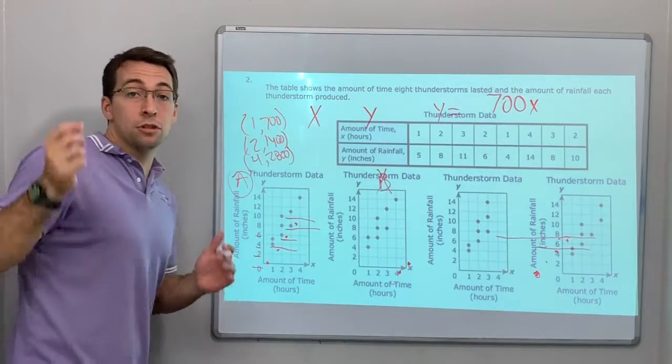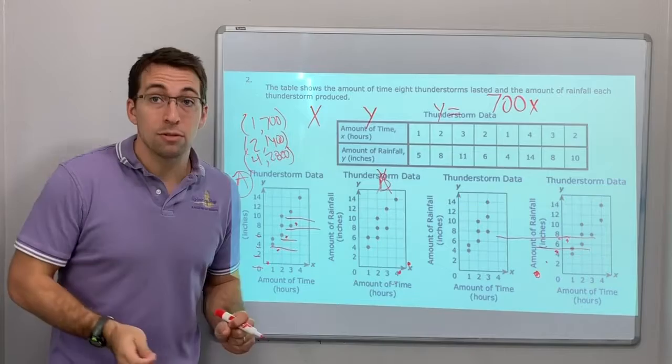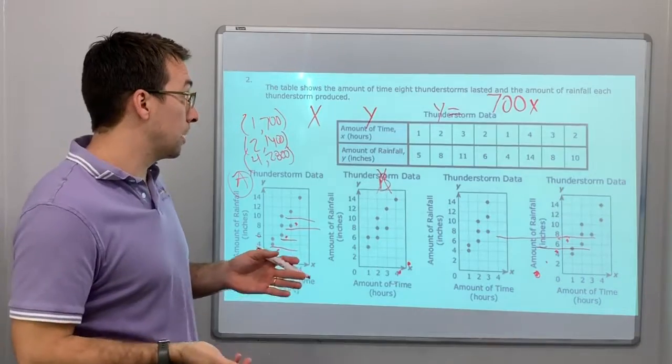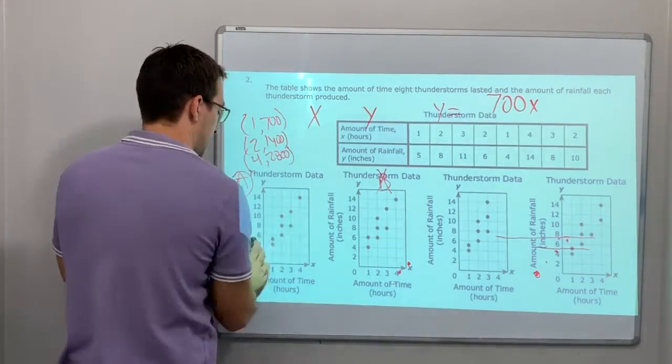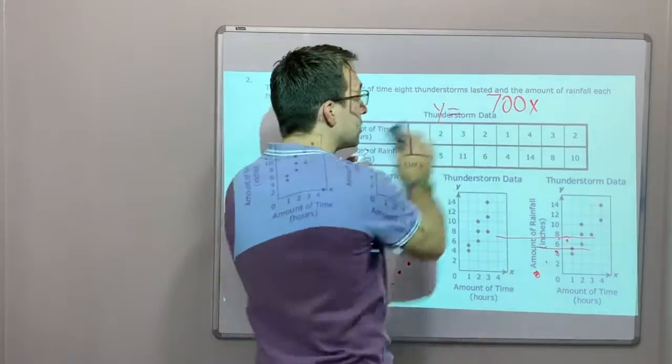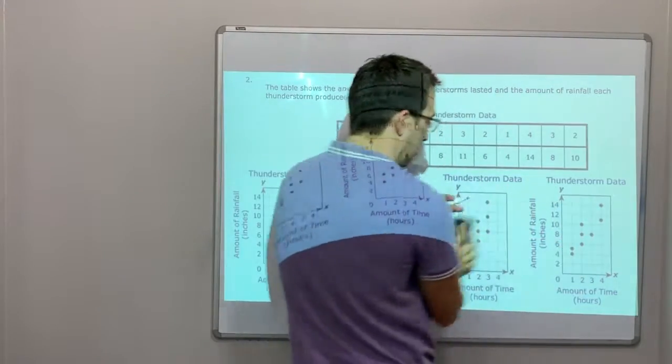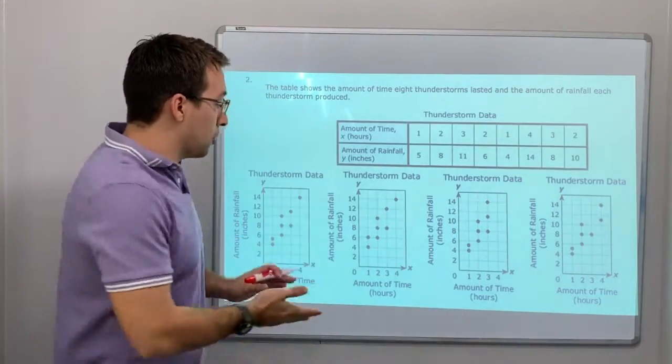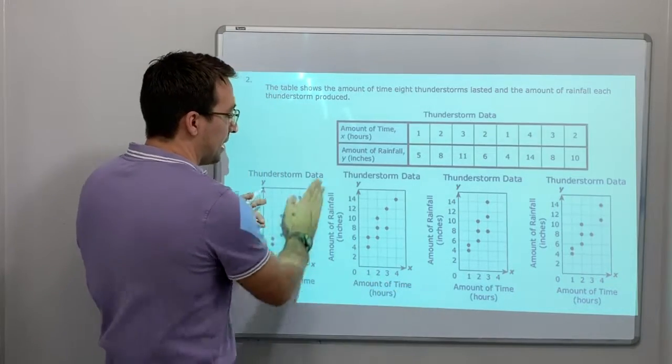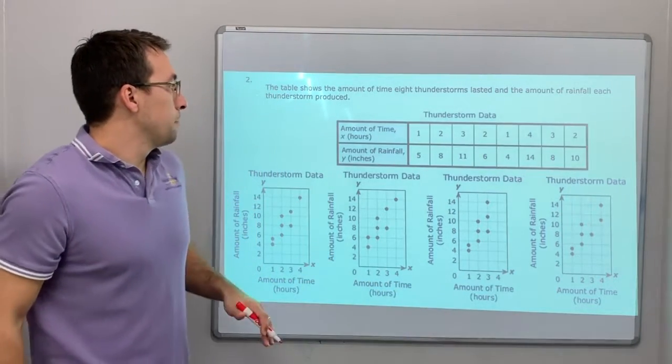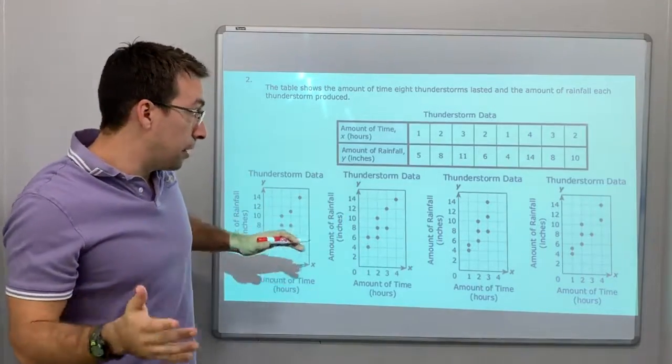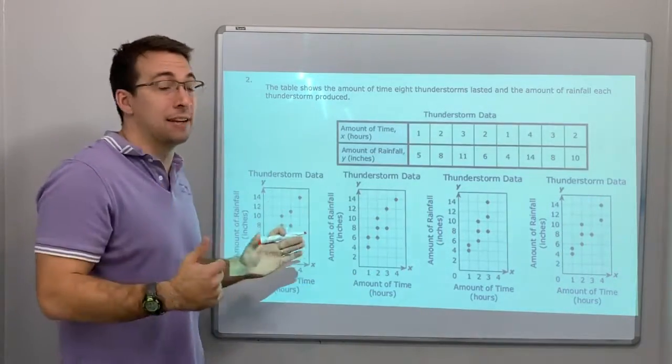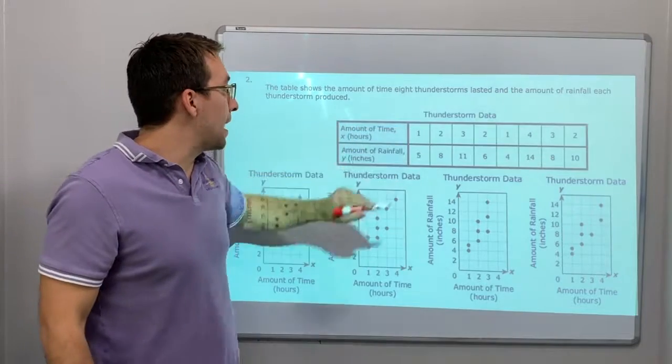Number two. The table shows the amount of time eight thunderstorms lasts, and the amount of rainfall each thunderstorm produced. I'm sorry. There's eight thunderstorms. How long was the thunderstorm, and how much rain? So here's a scatterplot. Just like what I was saying, you're comparing two different variables, the amount of time and the amount of rain. Which scatterplot is accurate with the table shown? 1, 5. Let's do that.